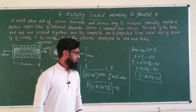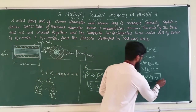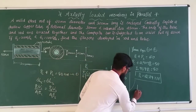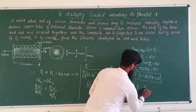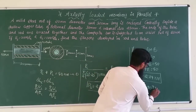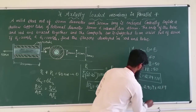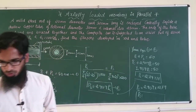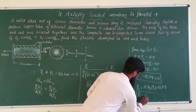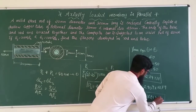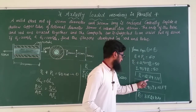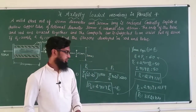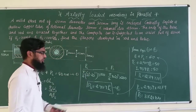Once we have P_c, we substitute back: P_s = 2.909 × 12.79 = 37.21 kN. We can verify: 12.79 + 37.21 = 50 kN. ✓